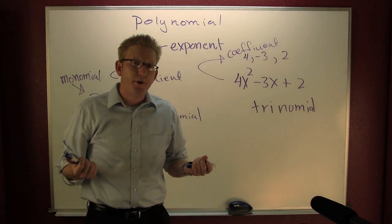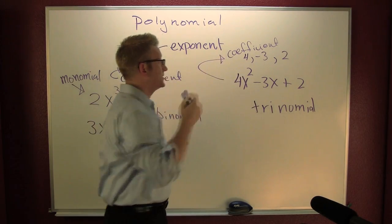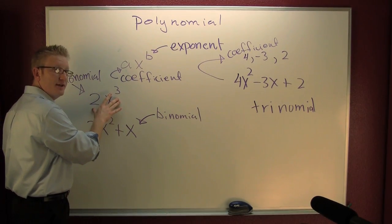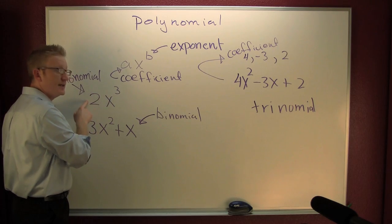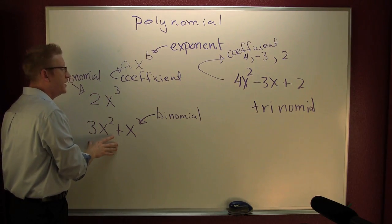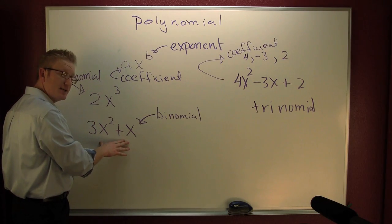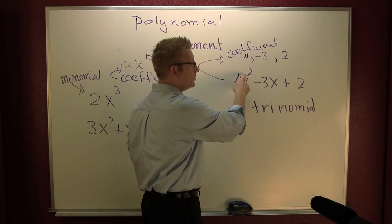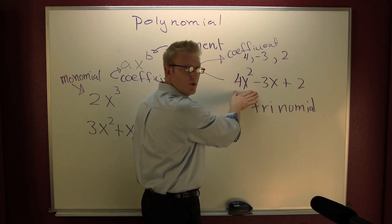The degree of a polynomial is the highest exponent on any one of its terms — the highest degree of any of its terms. Here, the degree is three, so this is a third degree monomial. Here, the highest degree is two, so this is a second degree binomial. And here, the highest degree is two, so this is a second degree trinomial.